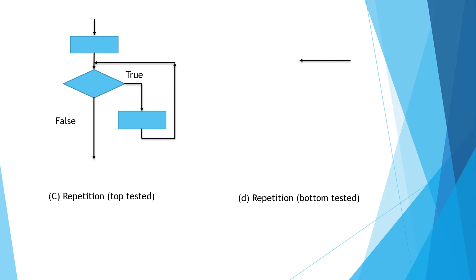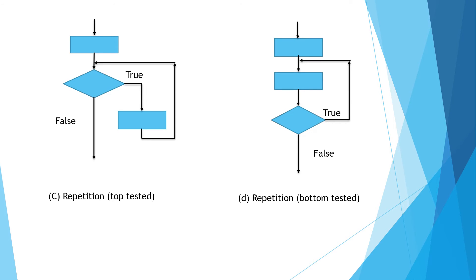The second type is repetition with bottom-tested. In bottom-tested, some processing statements are executed first, then we check the condition. If it evaluates true, we go back and process the statements again. At the end — that is why it is called bottom-tested — we test the condition, and if true, go back and process again. So in top-tested, condition is checked first then statements execute; in bottom-tested, statements execute first then condition is checked.